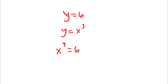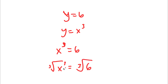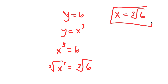To solve this, I'm going to take the cube root on both sides. The cube root of x to the power of 3 is equal to the cube root of 6. The cube root of x cubed is simply x, so I am left with x is equal to the cube root of 6. So this is my answer.